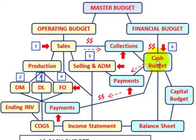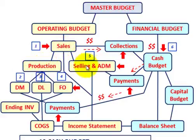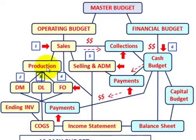The cash budget sits underneath our financial budget. We need to determine the collections or monies coming in, as well as the cash payments going out to all those production budgets. To develop our cash budget, we need to know all the budgets under our operating budget — our sales budget, all production budgets, and our selling and administration budget — including direct materials, direct labor, and factory overhead. The cash budget is one of the last budgets we develop.